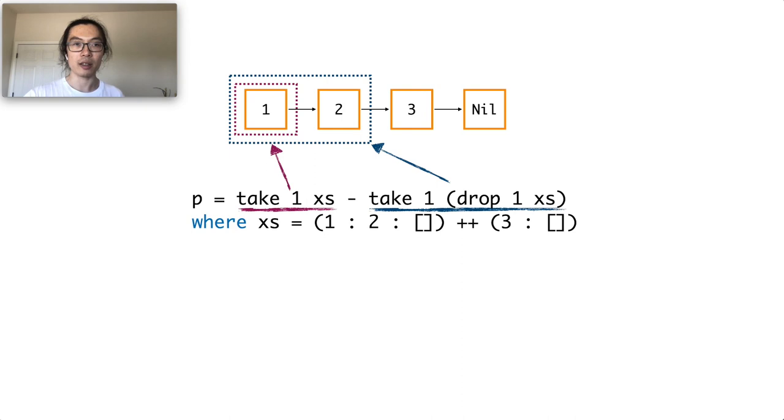Later, it realizes that we not only need the first cell of xs, we also need the second cell of it. So it retrieves the computation result we had earlier, computes the second cell of xs, and stores that in memory again.